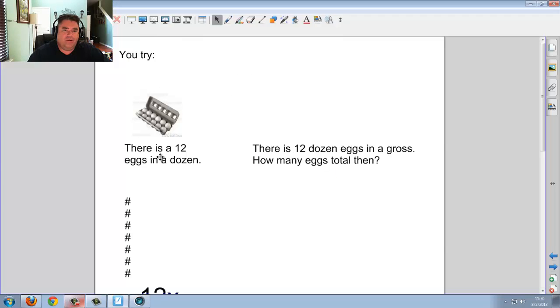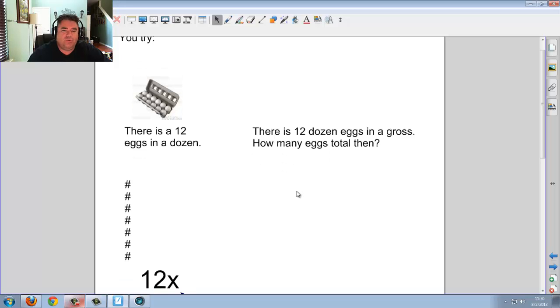Now you try. There are 12 eggs in a dozen. There is 12 dozen eggs in a gross. How many eggs total? Now I'm going to give you a hint. You start with 12x. So go ahead. Take a second. Figure out how many eggs are in a gross. Go ahead.